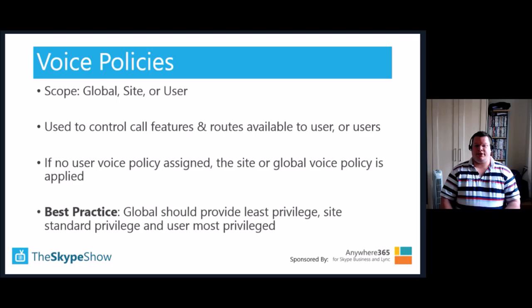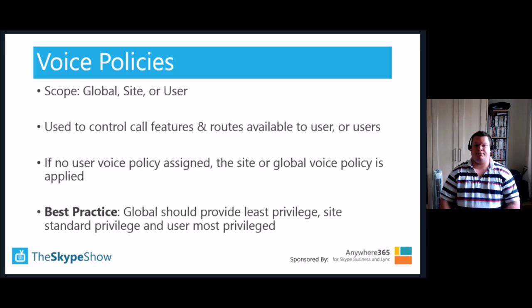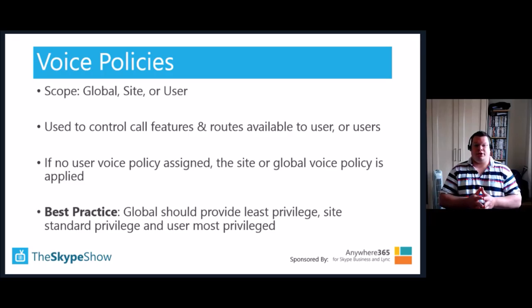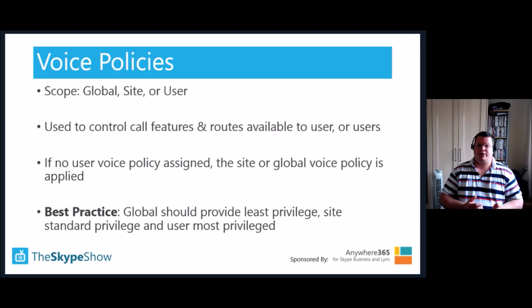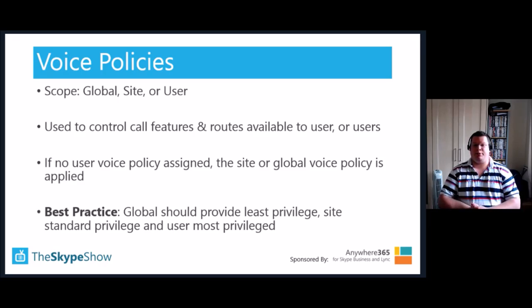If a user policy is not assigned to a user and there is a site policy, then the site policy is the effective policy. The site policy relates to the topology site in Skype for Business and is decided based on the user's registrar pool homing. Using a site policy over a user policy means you can assign a default level of features to all users on the same registrar pool — for example, allowing non-enterprise-enabled users within the same site to dial out within PSTN conferences using specific SIP trunks and caller IDs, without giving them full Enterprise Voice features.